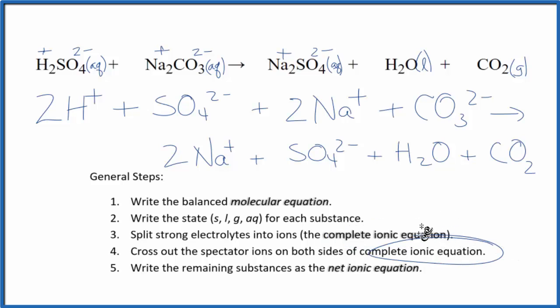Now we can cross out spectator ions. They're on both sides of this complete ionic equation and don't change in the chemical reaction. I have a sulfate ion in the reactants and in the products, so cross that out.